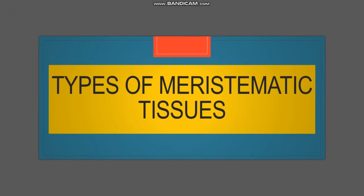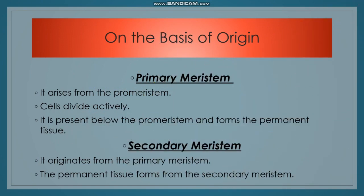Types of meristematic tissues on the basis of origin: There is primary meristem, secondary meristem, and pro meristem. Primary meristem arises from the pro meristem cells and is present below the pro meristem, forming permanent tissue. Secondary meristem originates from primary meristem. Permanent tissue arises from secondary meristem.